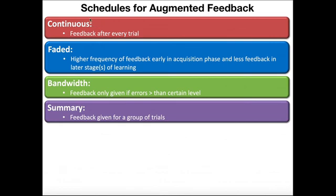Bandwidth feedback schedules are when feedback is only given if errors are greater than a certain level. In some cases, minor errors — like just missing one attempt — might not warrant feedback. But if the person's form is bad and that bad form could cause an injury, that might clearly be above a threshold where you'd want to give feedback. If they have really bad form, that crosses the threshold. Only for conditions like that would you give feedback — so if you only give feedback when errors exceed a certain threshold, that is a bandwidth schedule.